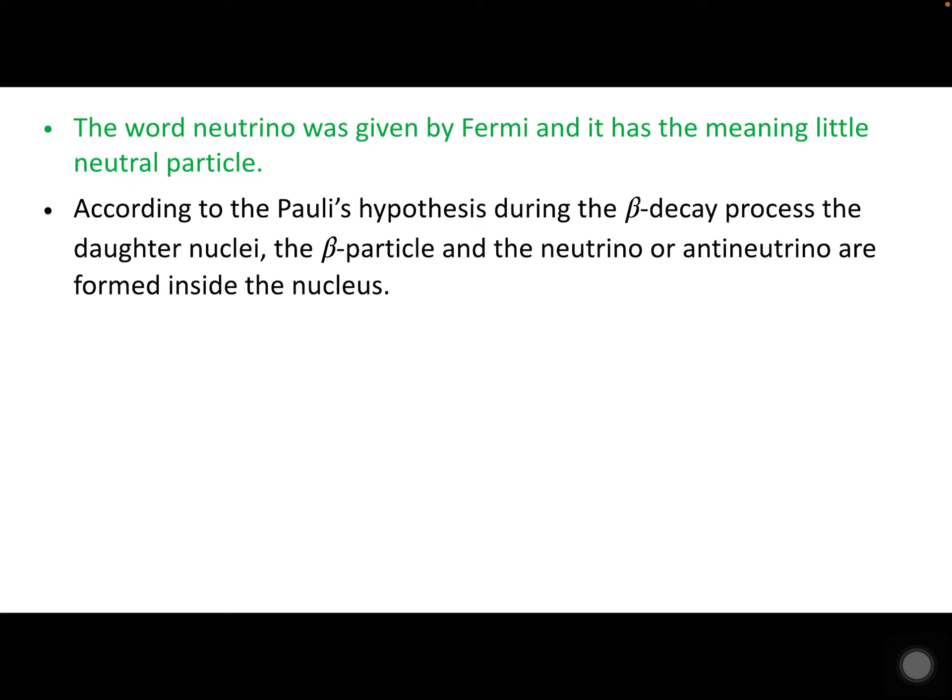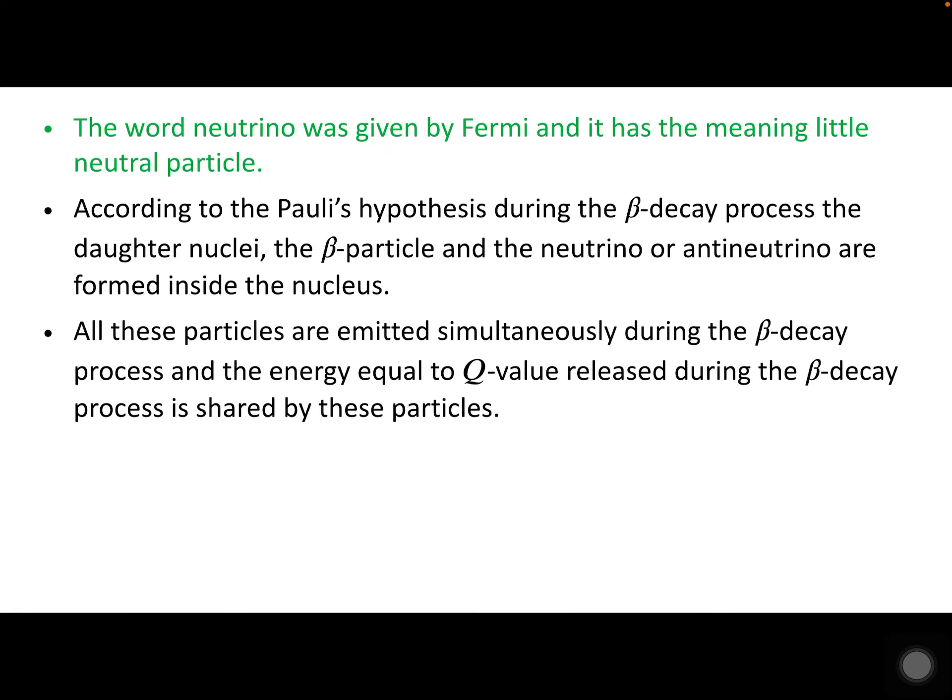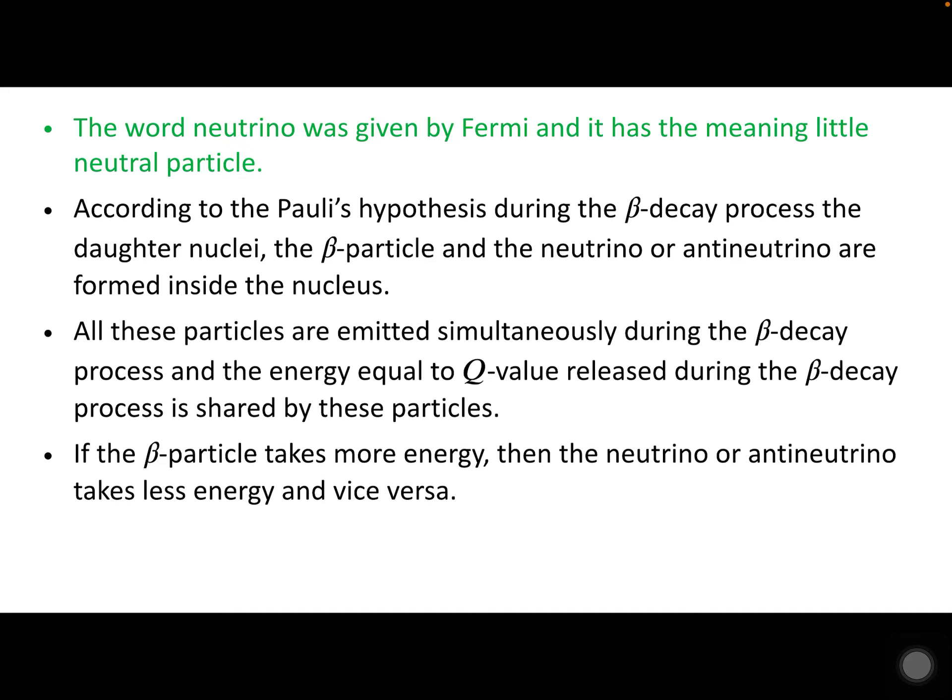According to Pauli's hypothesis, during the beta decay process the daughter nuclei, the beta particle, and the neutrino or anti-neutrino are formed inside the nucleus and all these particles are emitted simultaneously. During the beta decay process, an energy equal to the Q value is released, and this Q value energy is shared by these particles.